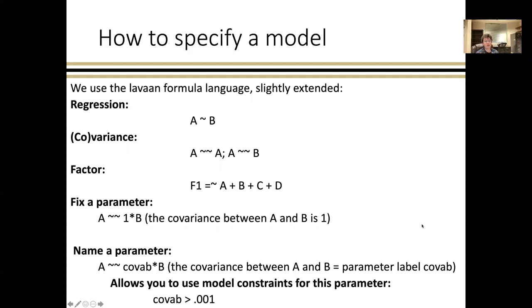We use the LeVon syntax for running the model. In this case, we would specify a regression relationship of A using A tilde B, or for those of you that think of it in the format of Y tilde X or outcome tilde predictor. For covariances, you would specify two tildes, and of course for a variance of a variable, it would be the covariance with itself. So A tilde tilde A. For a factor, you specify the factor name here, followed by equal signs tilde, and then the factor indicators.